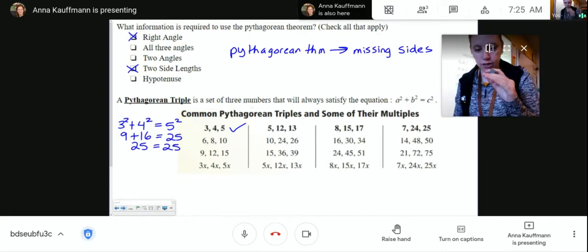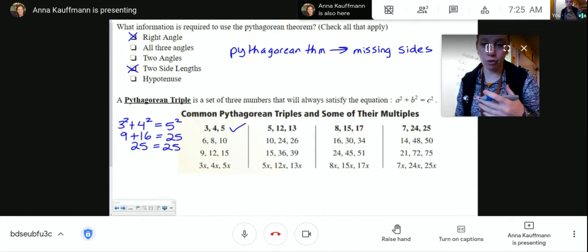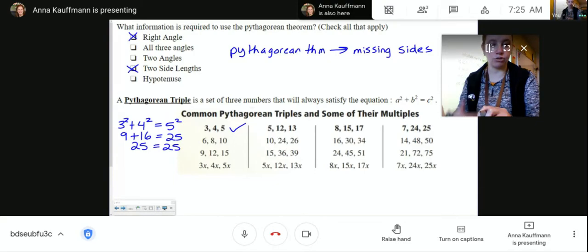And like you can see, you can scale it up. So if you have a 3, 4, 5, what we call it, a 3, 4, 5 triangle, you can have a 6, 8, 10 or a 9, 12, 15. Any multiple of 3, 4, 5 together will make a right triangle.